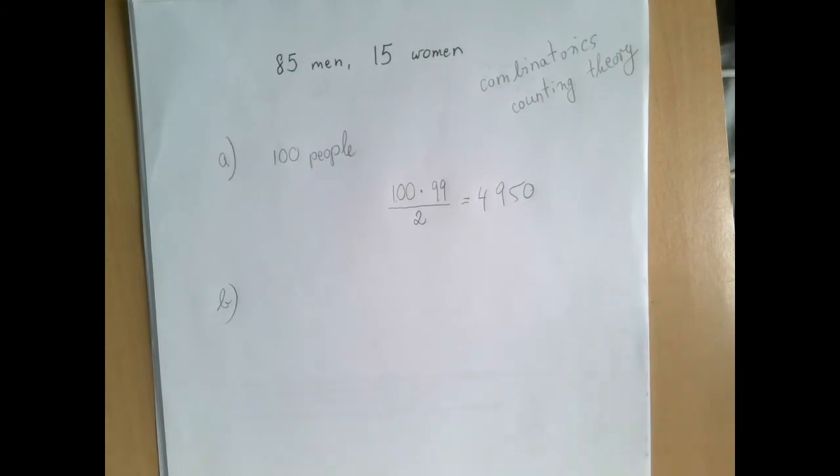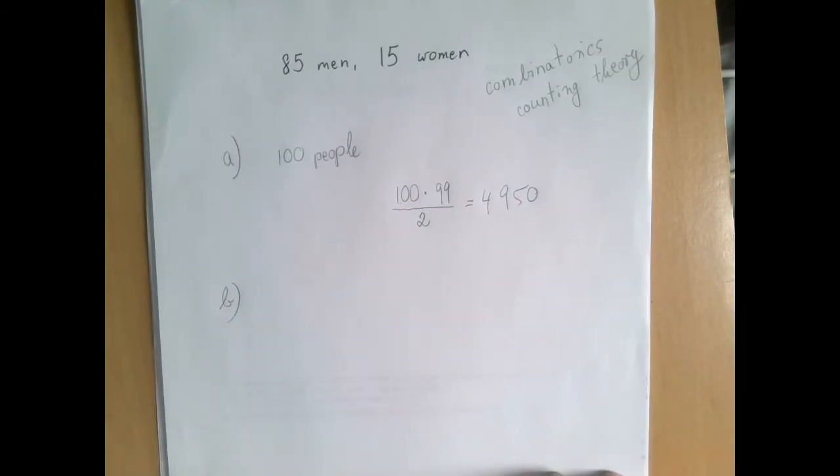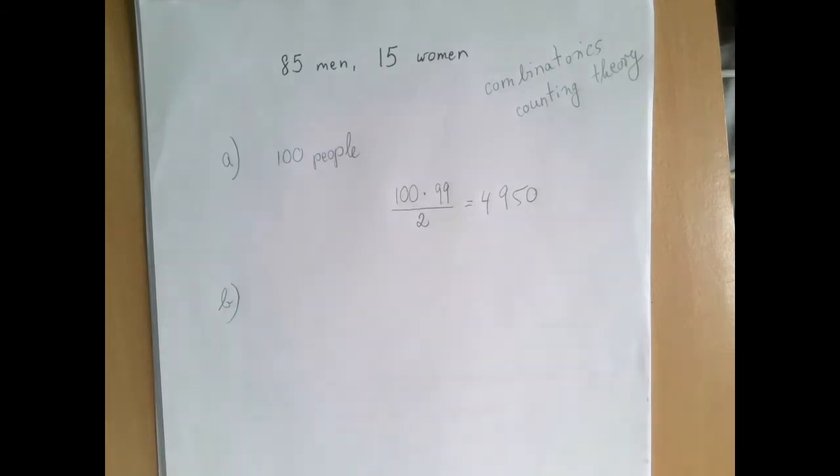Part B is asking, what if men only shake men's hands, but every man shakes hands with every man, and every woman shakes hands with every woman? How many handshakes took place? That problem is similar, but instead of 100 people, we imagine that the men and the women are in separate rooms.